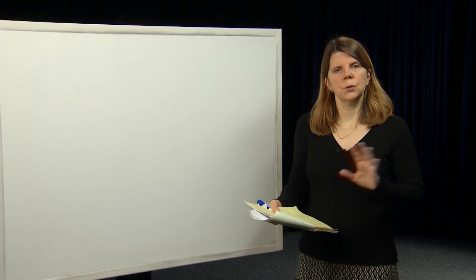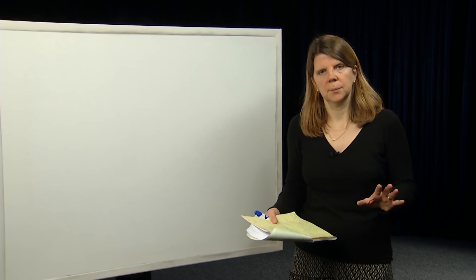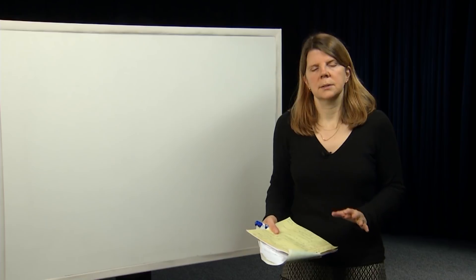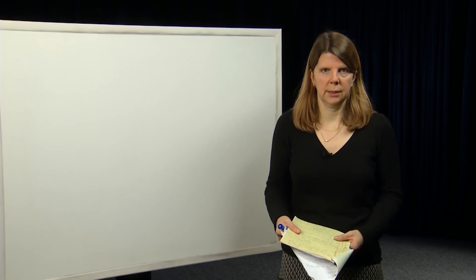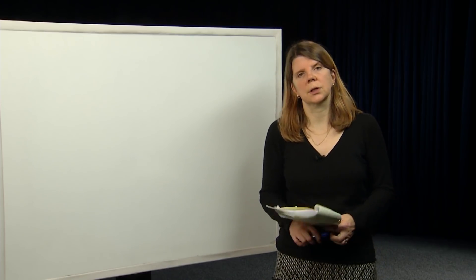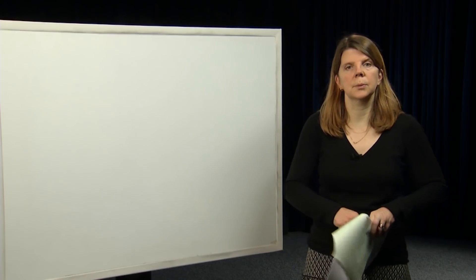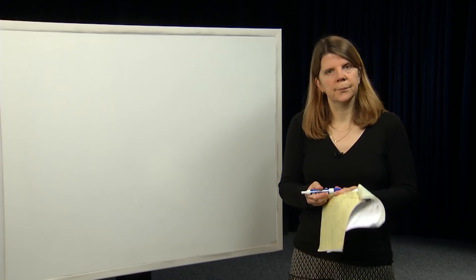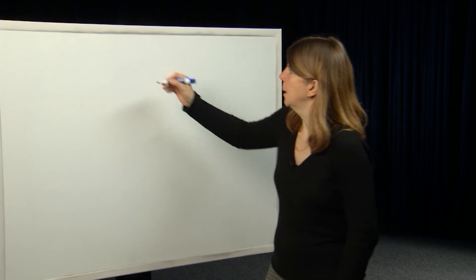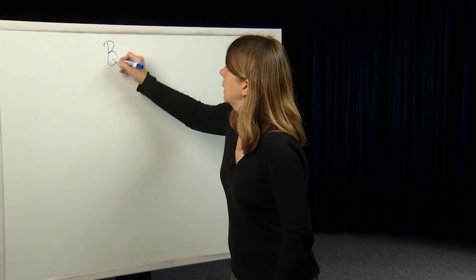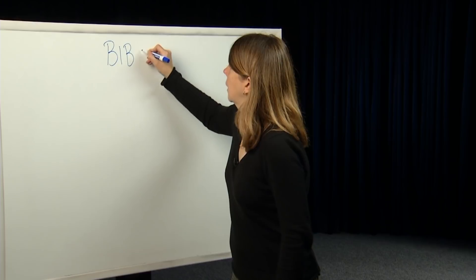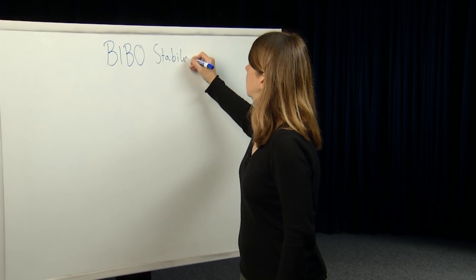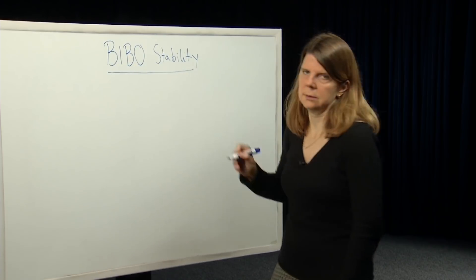We're going to have two different types of stability: bounded input, bounded output stability — so input-output related stability — as well as internal or state-space stability. So in this module, we'll introduce the concept of bounded input, bounded output stability. This is known as BIBO, just from the initials — bounded input, bounded output stability, BIBO stability.